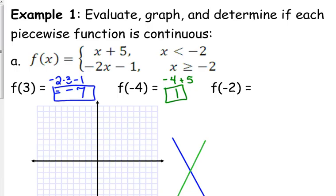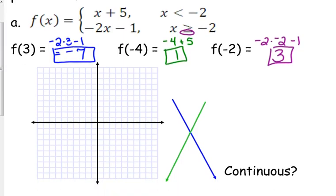What happens if they give us the boundary point — that's where the function changes. That's when you look at which piece has the equal to. So the second one has the equal to. If you're asked what is f of negative 2, then you plug that into the second one. Negative 2 times negative 2 is positive 4, and 4 minus 1 is 3.